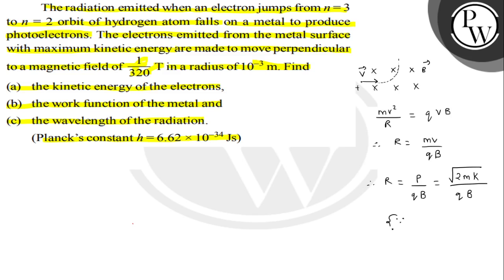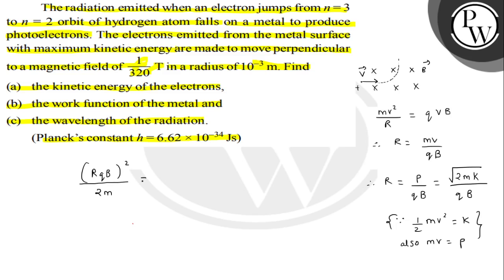Since half mv² is kinetic energy and mv is momentum, we can manipulate this result. For the first part of the question, kinetic energy K = (r²Q²B²) / (2m). Substituting the given values will give us the value of kinetic energy.